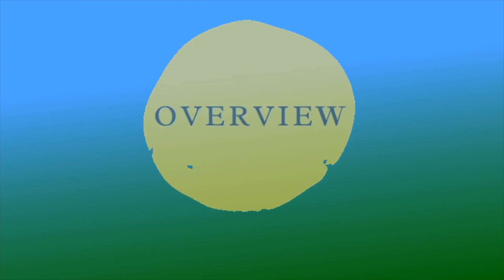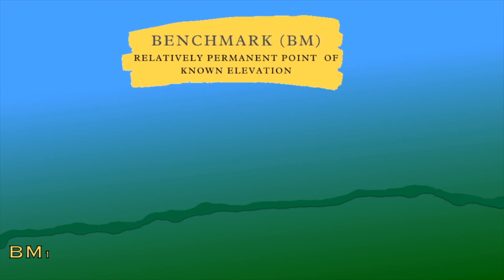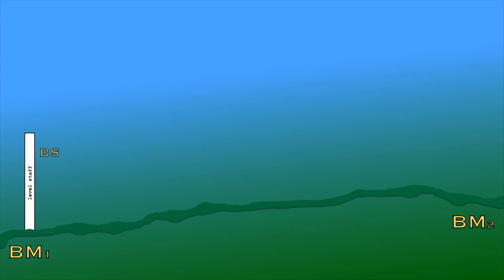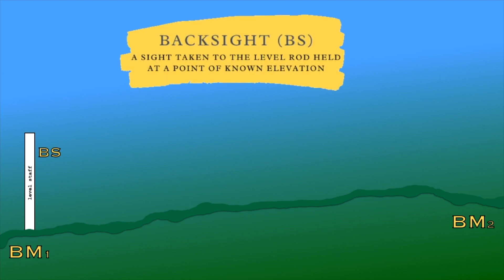Before we start the lab session, let me introduce some definitions and our plan of the work. We are going to measure elevation changes across Nazarbayev University. Here we have a benchmark point. A benchmark is a relatively permanent point of known elevation. Our goal is to find the elevation of a new point. Firstly, our leveling staff is placed on the benchmark with known elevation — this will be our starting station and first backside. Backside is a measurement taken at a known point.